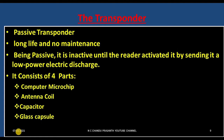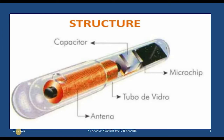The transponder consists of mainly four parts: a computer microchip, an antenna coil, a capacitor, and a glass capsule. The computer microchip and antenna coil are enclosed in a glass capsule.